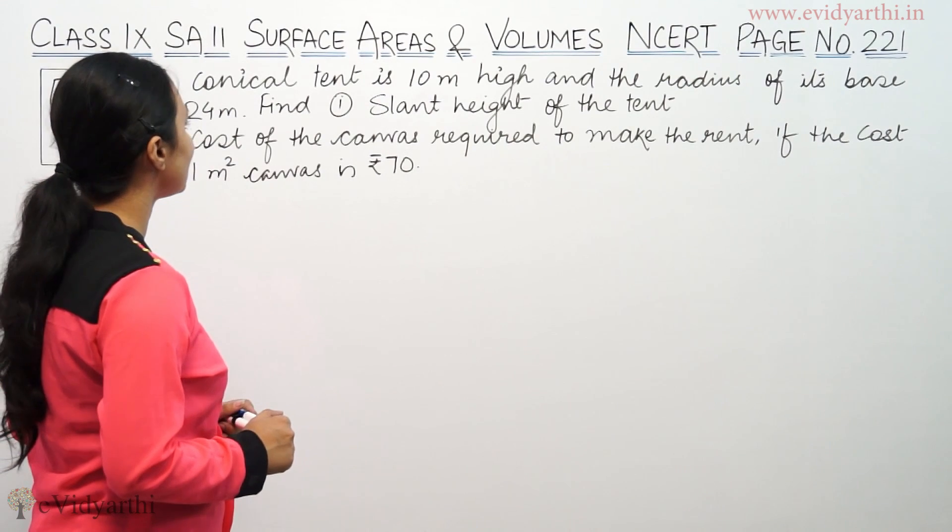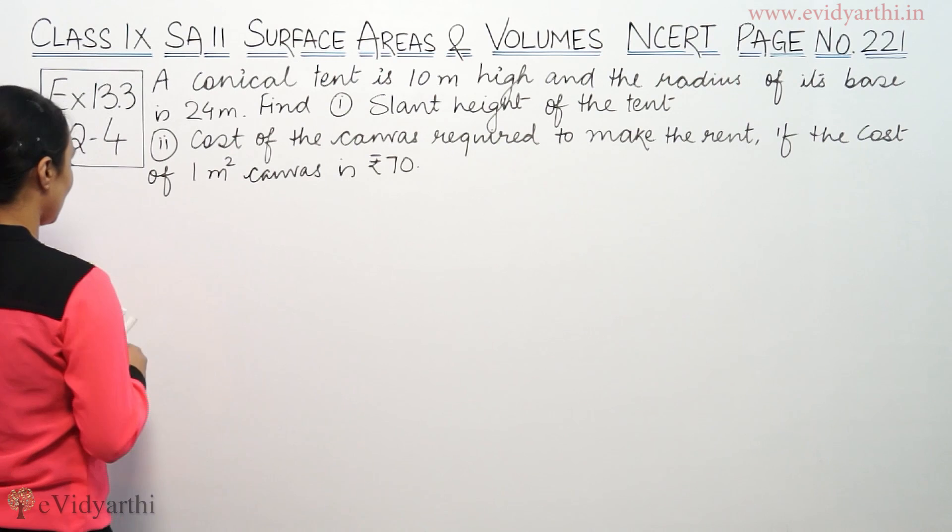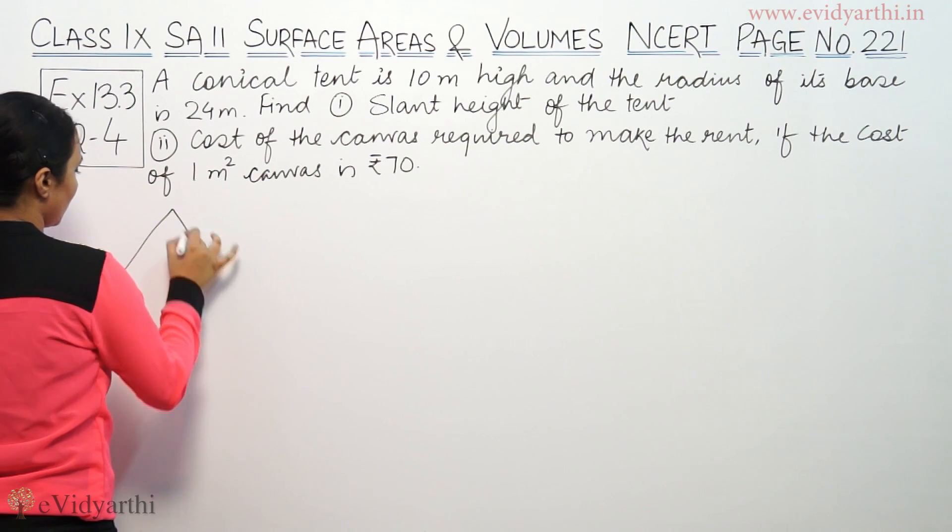The question says a conical tent is 10 meters high and the radius of its base is 24 meters.